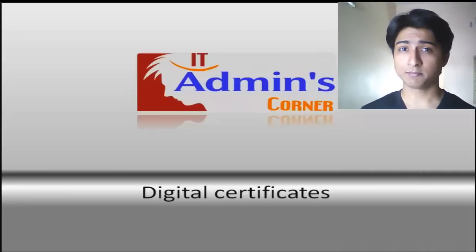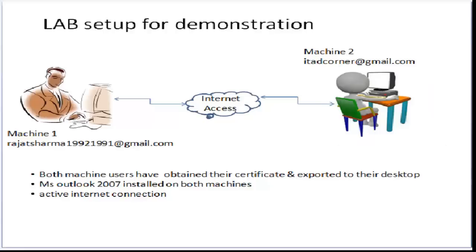We have two machines with two Gmail IDs. Both machines have obtained digital certificates and exported those certificates to the desktop. Both machines have MS Outlook 2007 installed and both machines have an active internet connection. Firstly, we will add Gmail accounts to Outlook and import user certificates to Outlook Express.